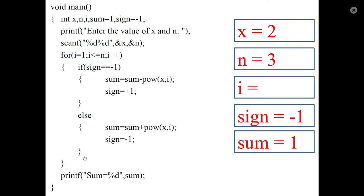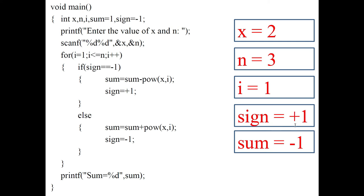Use a for loop, iterating 3 times. Initially i equals 1. Check the value of sign: if sign is minus 1, subtract x raised to i from the current sum. Here x equals 2 and i equals 1, so subtract 2 raised to 1. The result is minus 1. Then update sign to plus 1 for the next iteration.